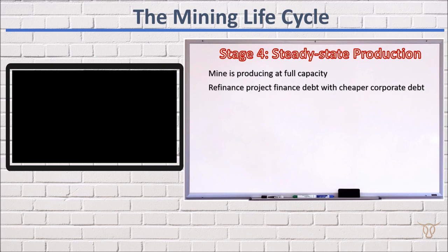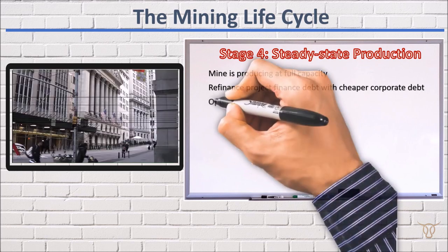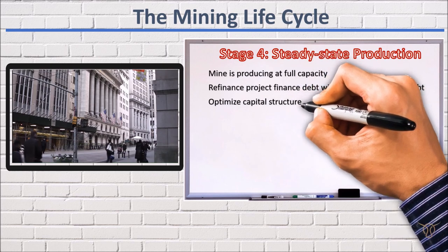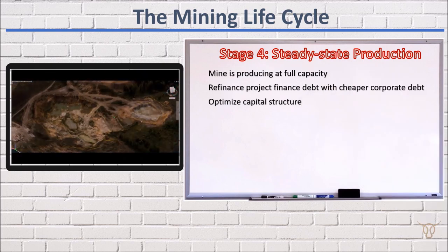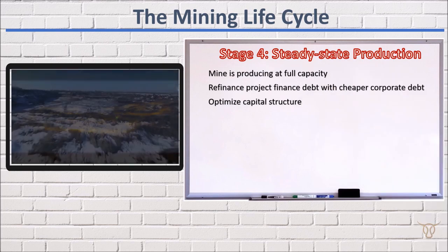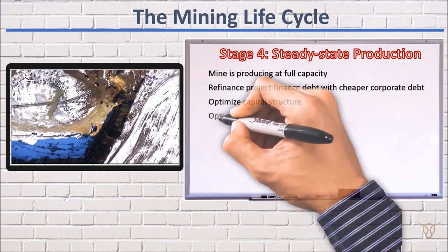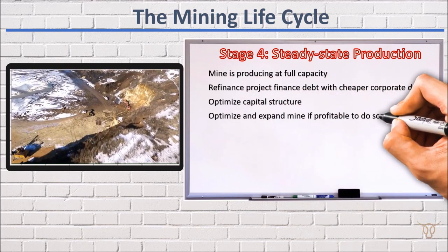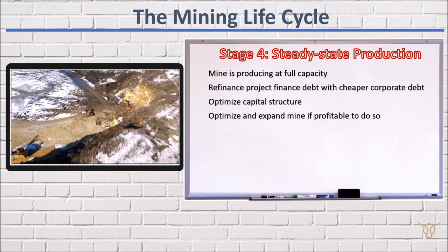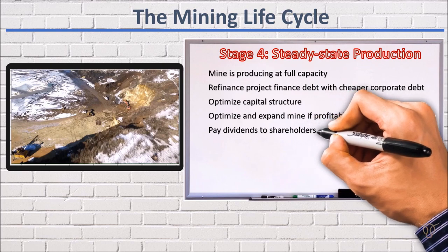Typical funders who would take part in such a refinancing would be commercial banks. Sponsors would seek to remove development finance institutions or other expensive funders and optimize their capital structures, taking cost and service offerings of various lenders into account. During this stage, sponsors are also investing in replacement capital expenditure to renew equipment and fleet. Sponsors may also wish to optimize the mine and expand its footprint further if profitable to do so. The payment of dividends to shareholders would also be an important priority at this stage.